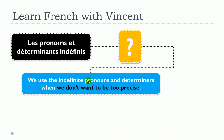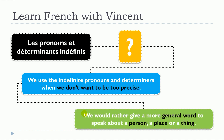We use the indefinite pronouns and determinants when we don't want to be too precise. These déterminants et pronoms indéfinis are used when we don't want to be too precise, and we would rather give a more general word to speak about a person, a place, or a thing.